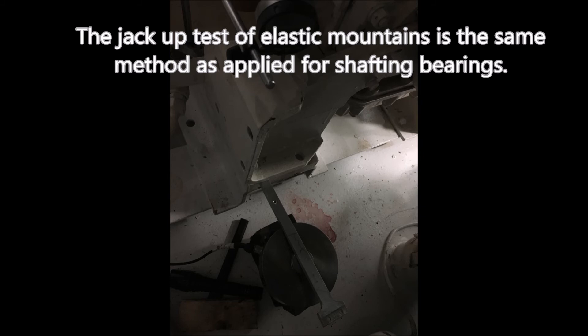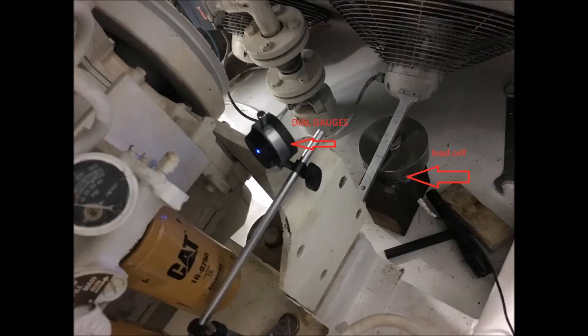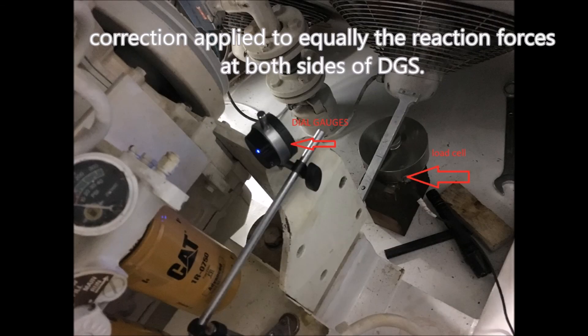The jack-up test of elastic mountings is the same method as applied for shafting bearings. Correction is applied to equalize the reaction forces at both sides of DGS.